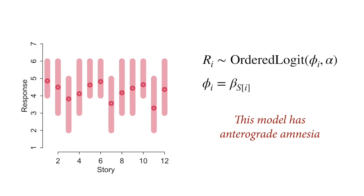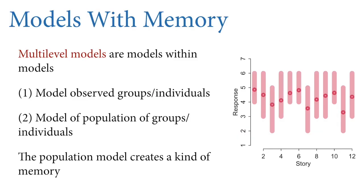As the model moves from one response to the next, from one story to the next, it doesn't use anything it's learned about the previous stories to help it learn about the next story. Maybe that sounds a little odd, so I'm going to build this up over the next several slides.